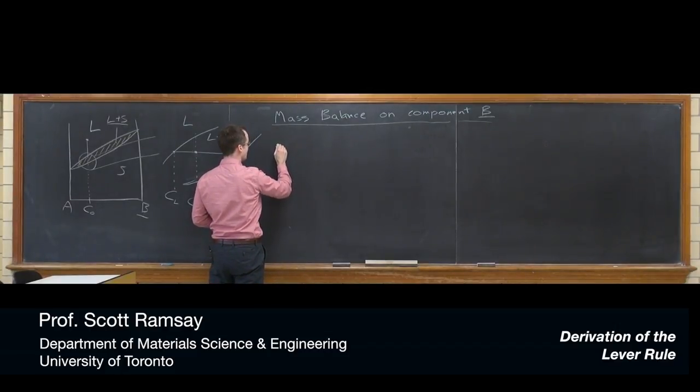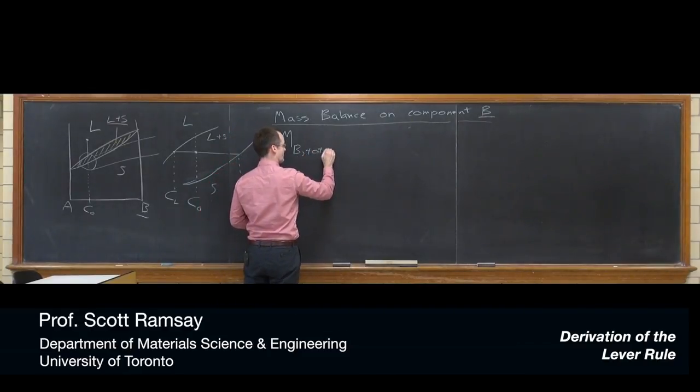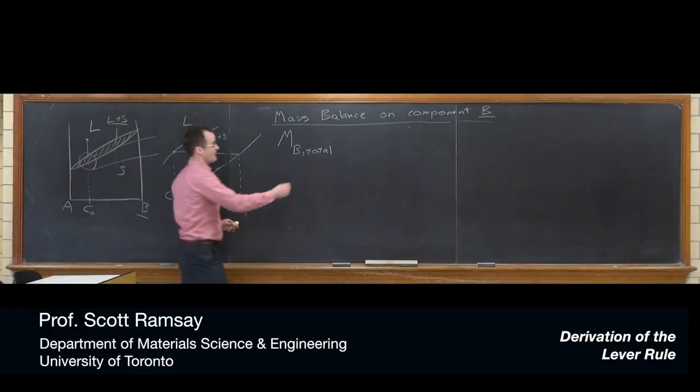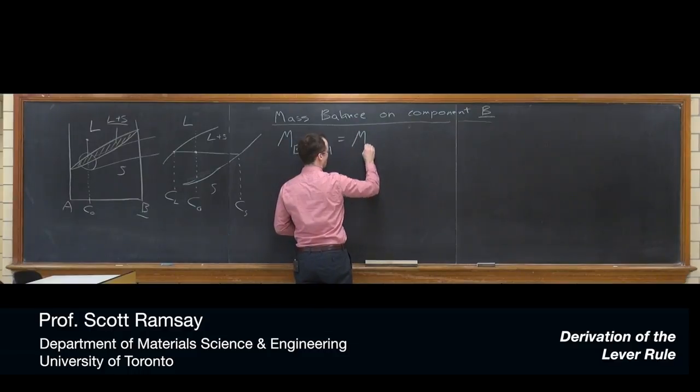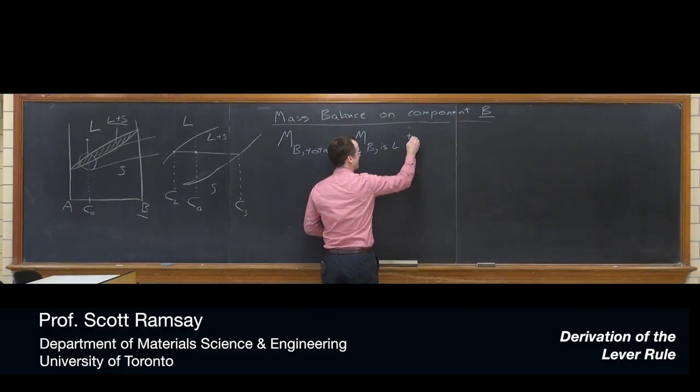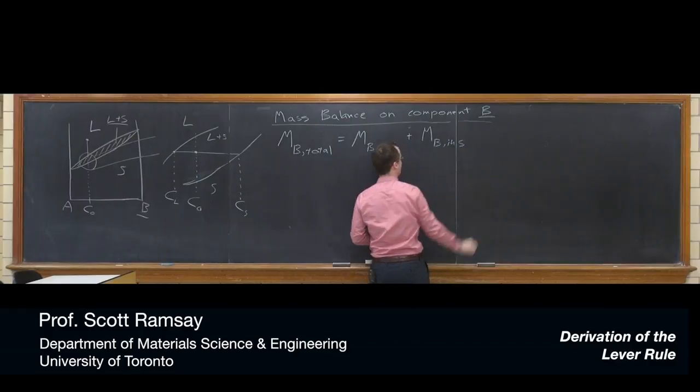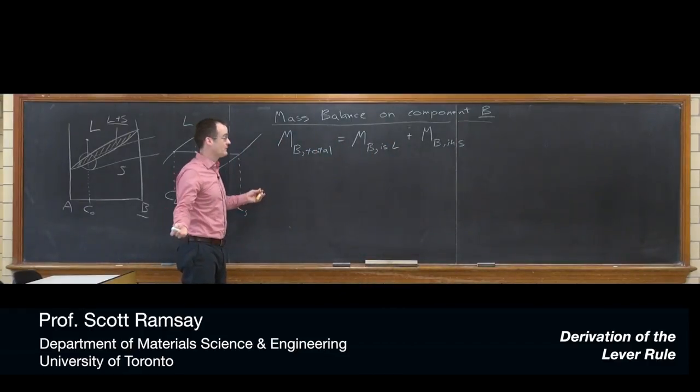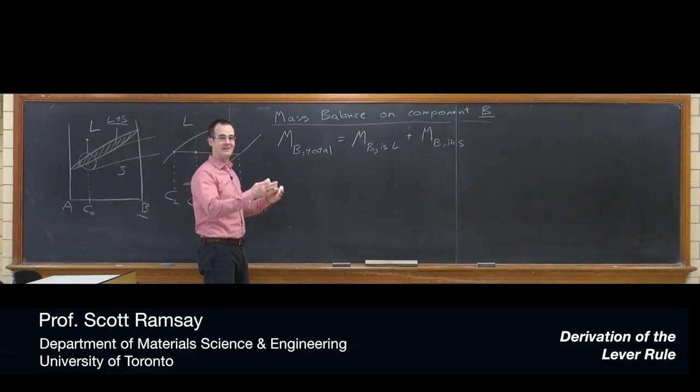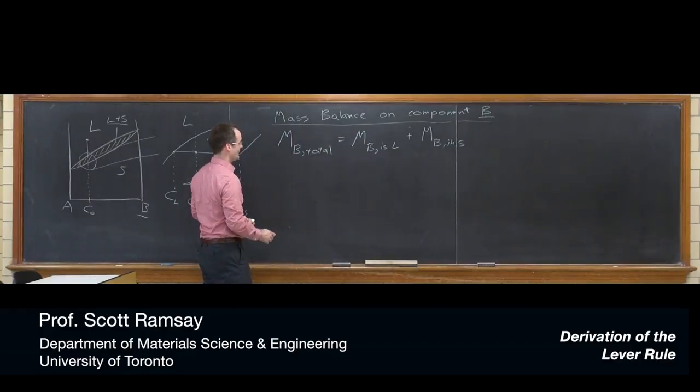So the mass B total, that's all the B, all component B that you put into the system, has to be spread across mass B in the liquid and mass of B in the solid. That's the only two places it can go. That's the only two components. Sorry, two phases. I made a common mistake there. Components are different from phase. There's two phases of liquid and solid. I apologize for that little slip of the tongue.